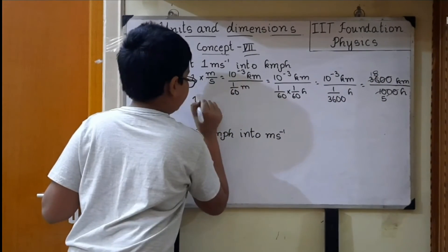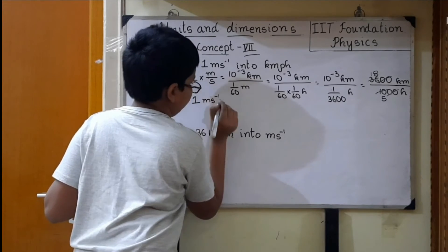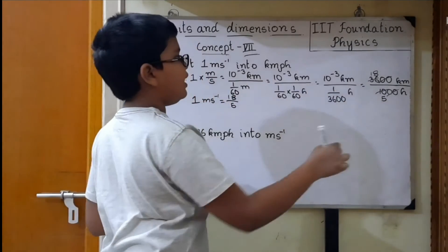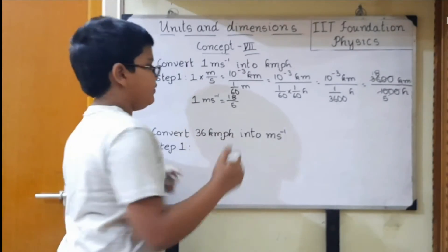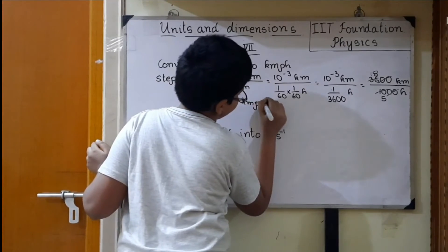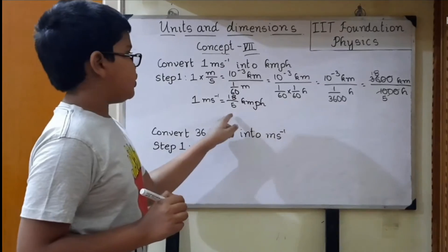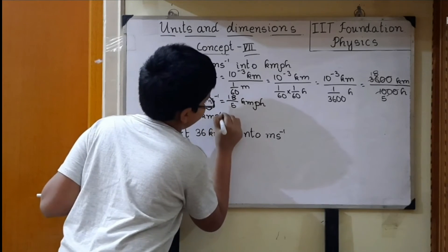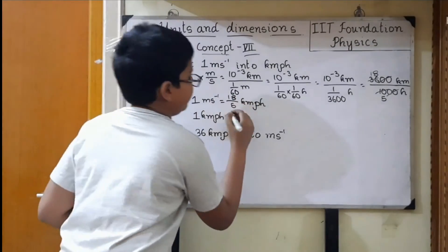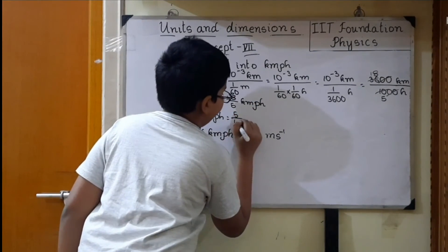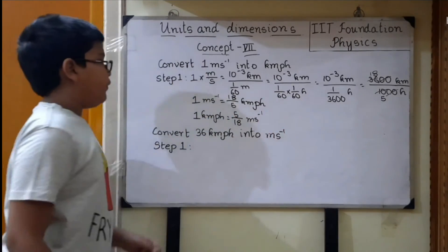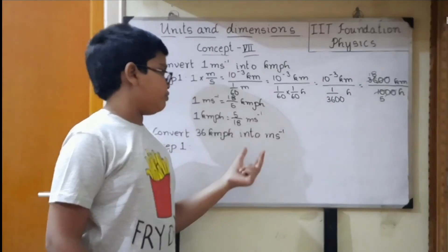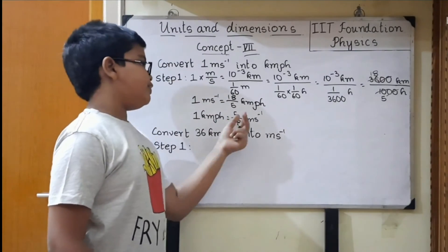We have concluded that 1 meter per second equals 18 by 5 kilometer per hour, which can be written as 18 by 5 kmph. And 1 kilometer per hour equals 5 by 18 meter per second. So: 1 meter per second equals 18 by 5 kilometer per hour, and 1 kilometer per hour equals 5 by 18 meter per second.